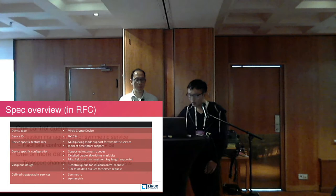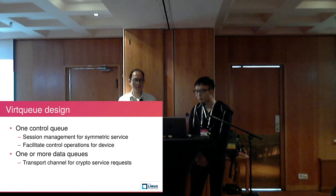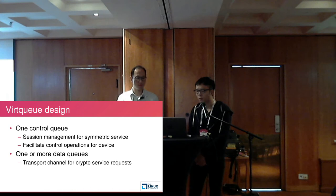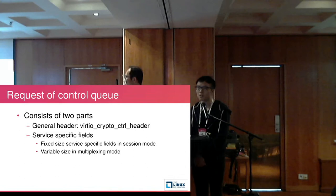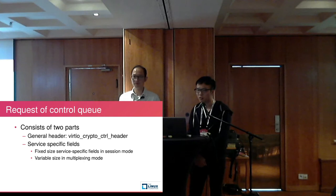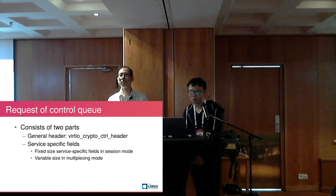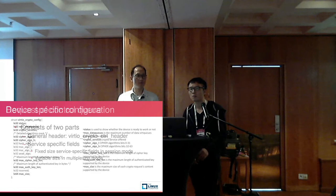This is the virtqueue design. It has one control queue used for session management for symmetric service and to facilitate control operations for the device. The data queues are used to transfer crypto service requests. The request of the control queue consists of two parts: the general header and the service-specific fields — fixed size in session mode, and variable size in multiplexing mode. The data queue request is mostly similar, but the general header structure differs from the control queue.